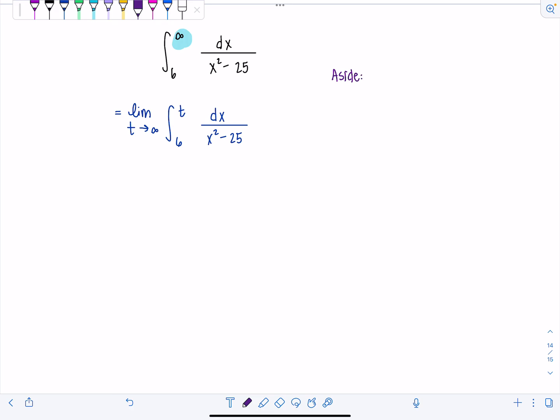I need to factor that denominator, the x squared minus 25. So we're going to have 1 over x minus 5 times x plus 5. And so both of those are linear factors, not repeated. So I'll have A over x minus 5 plus B over x plus 5.